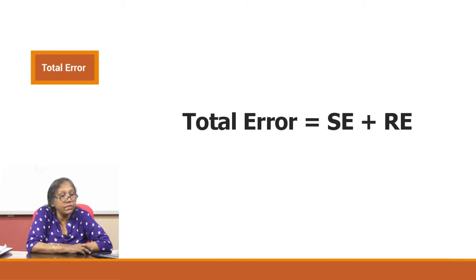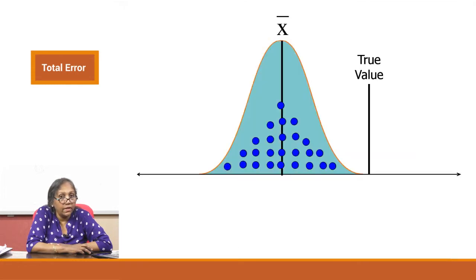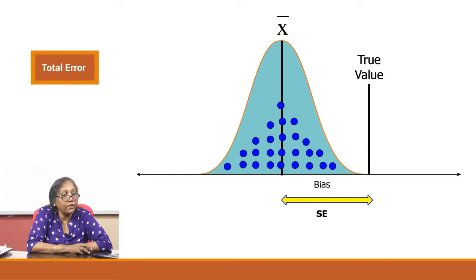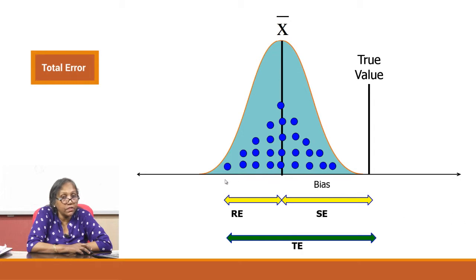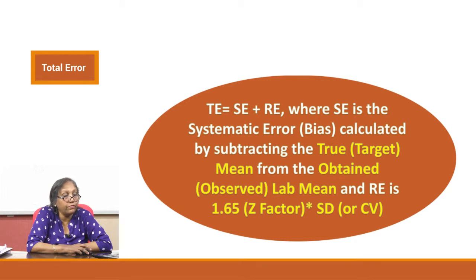Total error is systematic error plus random error. The systematic error is your lab value minus your true value — that is your bias. The random error is 1.65 × standard deviation. Together, SE plus RE equals total error. Total error = SE + RE, where SE (systematic error or bias) is obtained by subtracting the true/target mean from the observed lab mean, and RE (random error) = 1.65 (Z factor) × SD or CV.